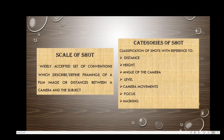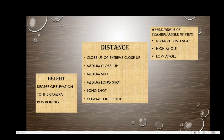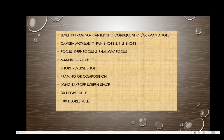Height shows the degree of elevation of the camera. Based on distance, we have close-up, extreme close-up, medium close-up, medium shot, medium long shot, long shot, and extreme long shot. Angles include straight-on, high angle, and low angle. Other elements include level in framing, camera movements such as pan shots and tilt shots, deep focus, shallow focus, iris shot, shot/reverse shot, long take, the 30-degree rule, and the 180-degree rule.